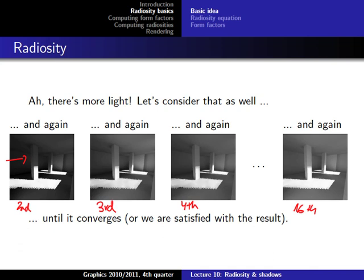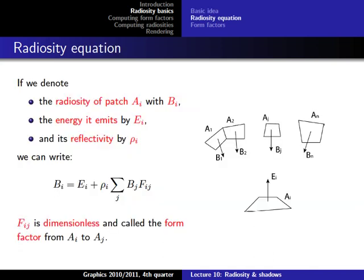This iterative process is the basic idea of radiosity. Because it's iterative it is slow and cannot be done in real-time rendering. However, you could do it in a pre-processing step and then use the results in a real-time rendering program, since if the global lighting conditions don't change you can pre-calculate it and have it ready in your scene. Now let's look at how to implement this mathematically.